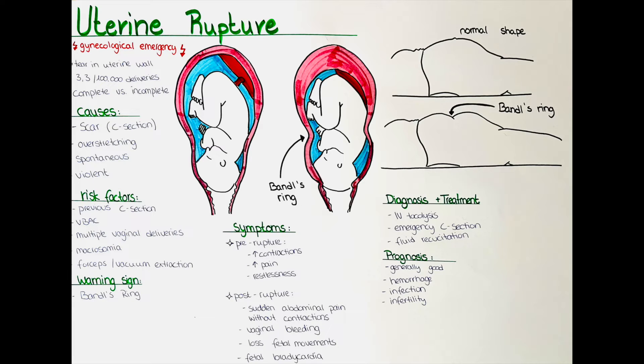A characteristic warning sign is the Bandle's ring. The Bandle's ring is a pathological ring that forms in the upper segment of the uterus during obstructed labor. It is a sign of impending uterine rupture. The ring is formed by the thickening of the upper segment of the uterus as it contracts against the obstruction.